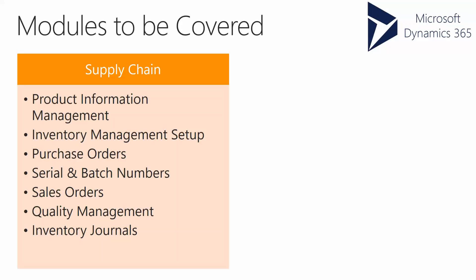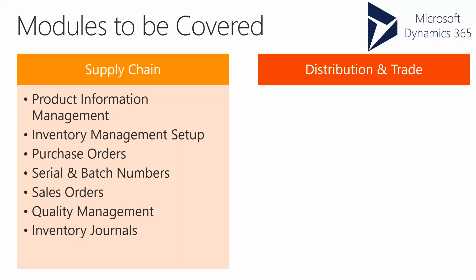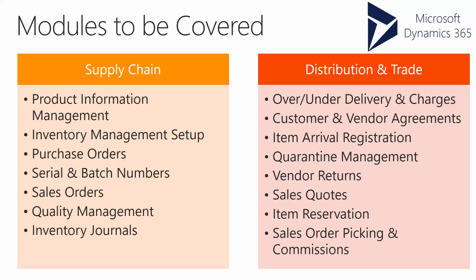We'll also cover inventory transfers, quantity adjustment, counting journals, and so on. The second portion is Distribution and Trade, which heavily covers over-delivery, under-delivery, and setting up and configuring manual and automated charges.